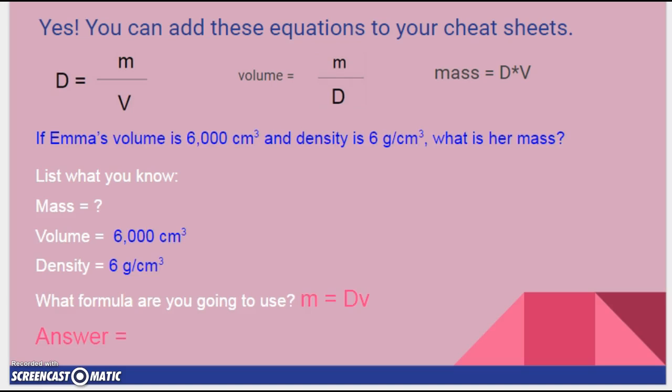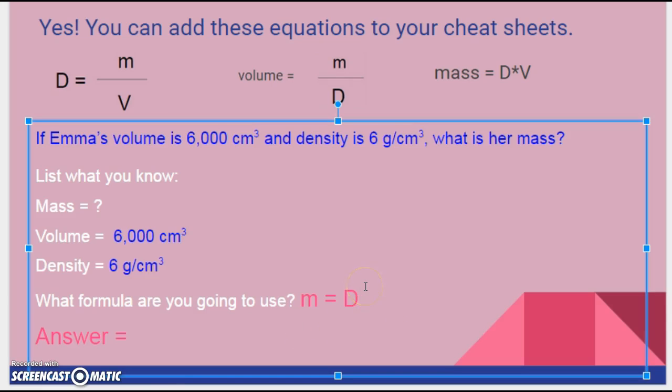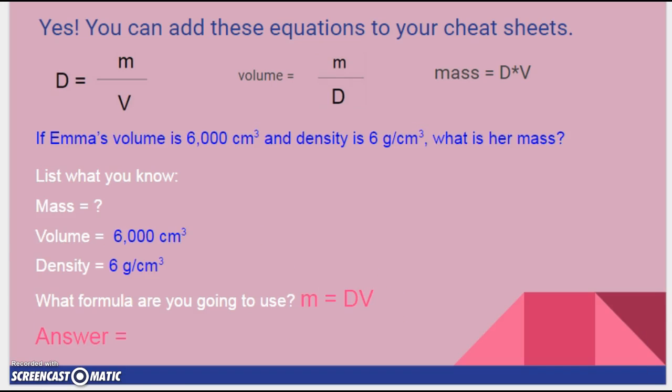The volume is 6,000 centimeters cubed. The density is 6 grams per centimeter cubed. And the formula we're going to use is mass equals density times volume. And, oop, typo there. That needs to be a capital V, otherwise it stands for velocity.